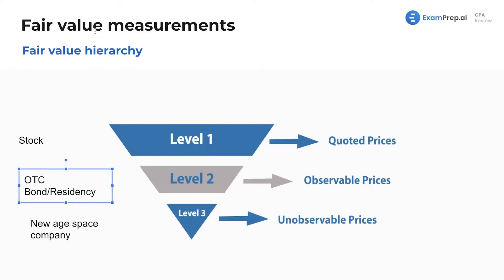Now, this is valuation — fair value. How do you determine the fair value of something? You have one share of Apple stock — how do you determine that? You Google Apple stock and it'll tell you one share is worth, say, $100. That's a quoted price because it's easily accessible, meaning I could trade one share of Apple stock for another — they are completely identical. It's updated by the second. That's pretty easy to value.